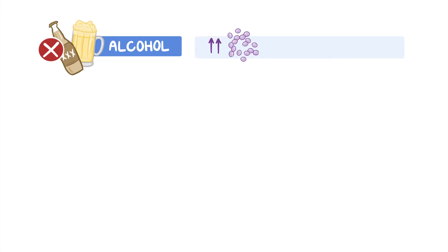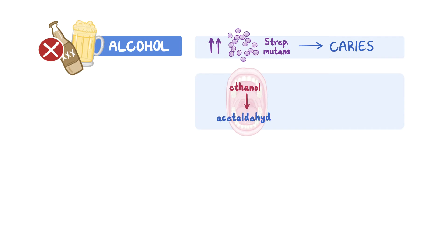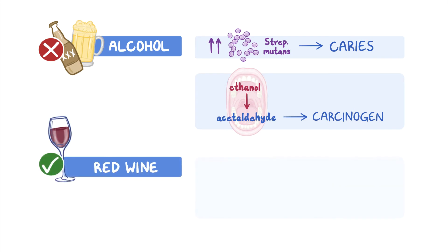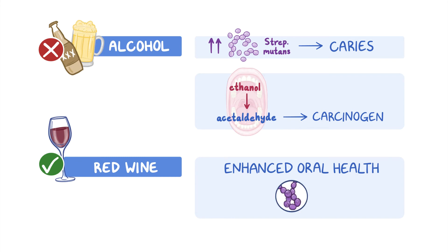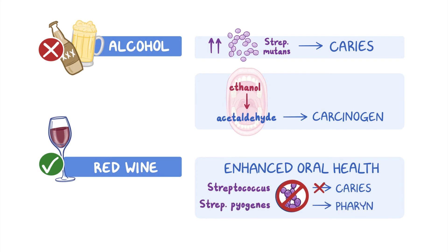Alcohol can lead to an increase in gram-positive bacteria such as Streptococcus mutans, which can lead to dental caries. Oral bacteria also convert ethanol to acetaldehyde, which is a carcinogen. However, moderate consumption of red wine may enhance oral health because it contains a mixture of organic acids that are active against oral Streptococci responsible for caries development, and Streptococcus pyogenes responsible for pharyngitis.